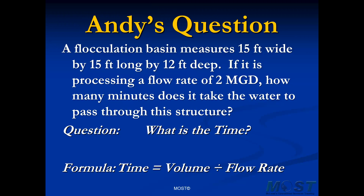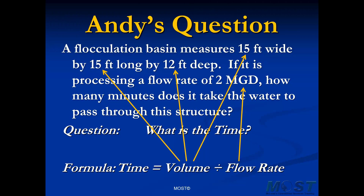So the fourth step is to look for the two variables: volume and flow rate. Do we have the volume in the problem? We don't, but we do have the dimensions of the basin, so with a little preliminary work we can find the volume. And the flow rate — we have a flow rate, but the problem is that it will be in the wrong units. We need our volume and flow rate to be in compatible units. If we want our answer in minutes, our flow rate should be in minutes-oriented units — gallons per minute. And if our flow rate is in gallons per minute, we'll want our volume not in cubic feet, but in gallons.